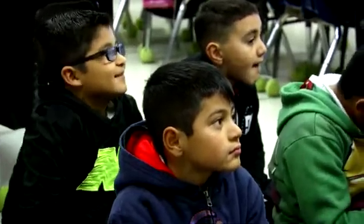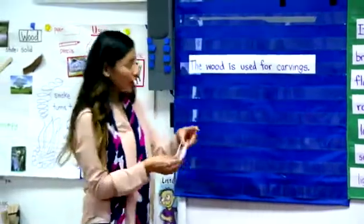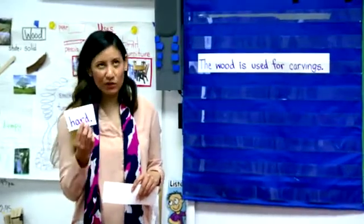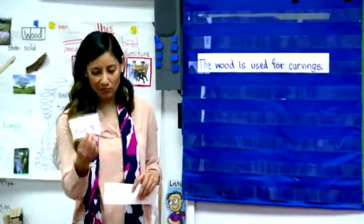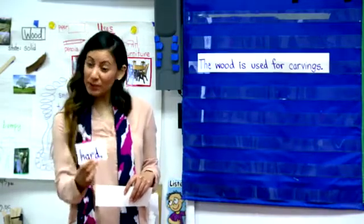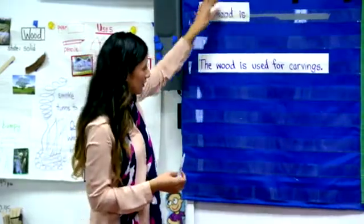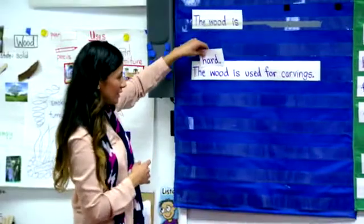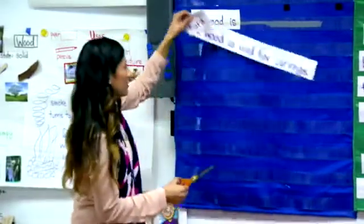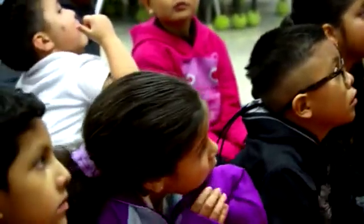The teacher takes off the adjective and reminds students that in English the adjective goes before the noun — unlike in Spanish. She squeezes the adjective into the second sentence using cut-up sentence strips. She explains: 'We know the wood is solid. The wood is brown. The wood is used for houses.' So placing 'solid' and 'brown' before 'wood' gives us: 'The solid brown wood is used for houses.' When using two adjectives, a comma is needed after the first adjective.